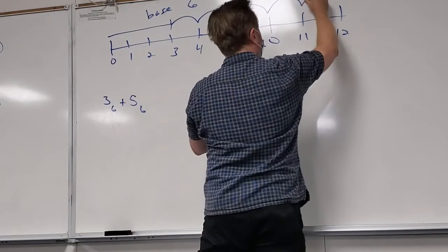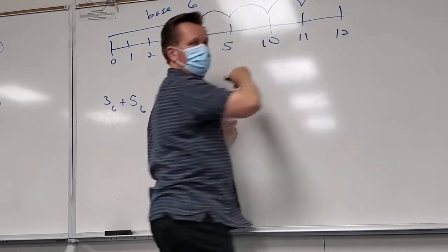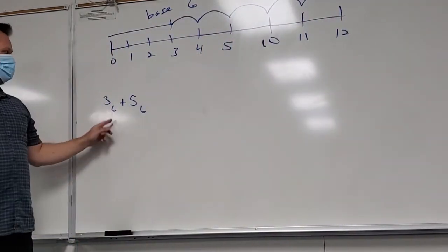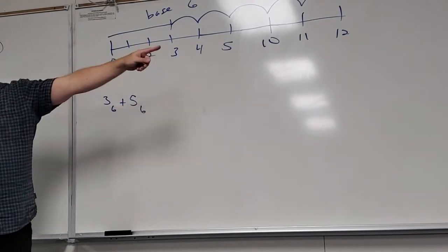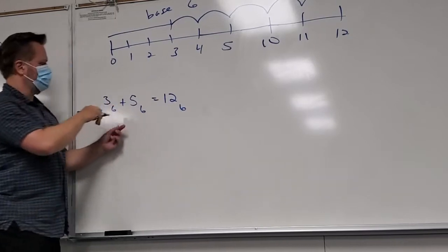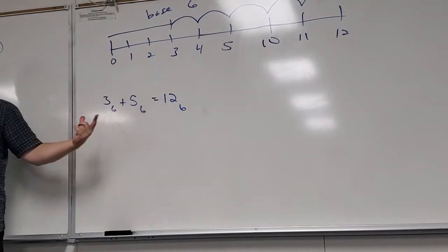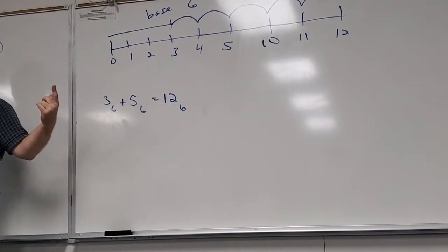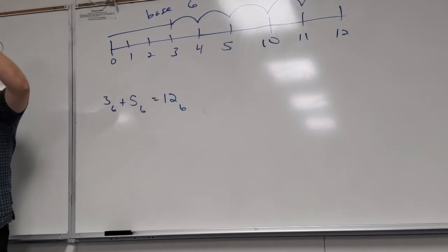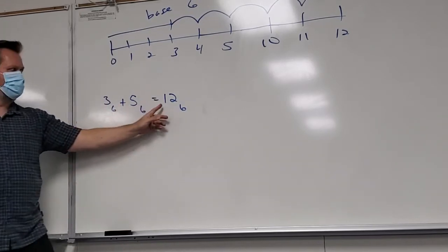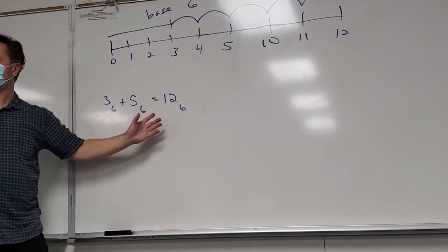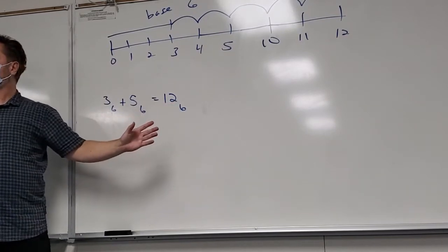So what's three base six plus five? Well, let's make sure this makes sense. What is three plus five? Eight. How would you write eight in base six? It would be one six plus two ones — that's eight. Yes!